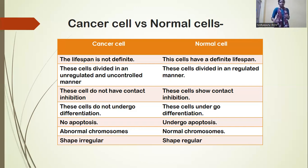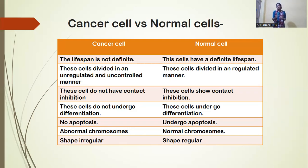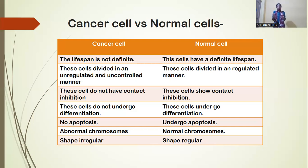Cancer cells divide in an unregulated and uncontrolled manner. These cells do not have any regulated manner. But in the case of normal cells, they have regulators that control division in a regulated manner.